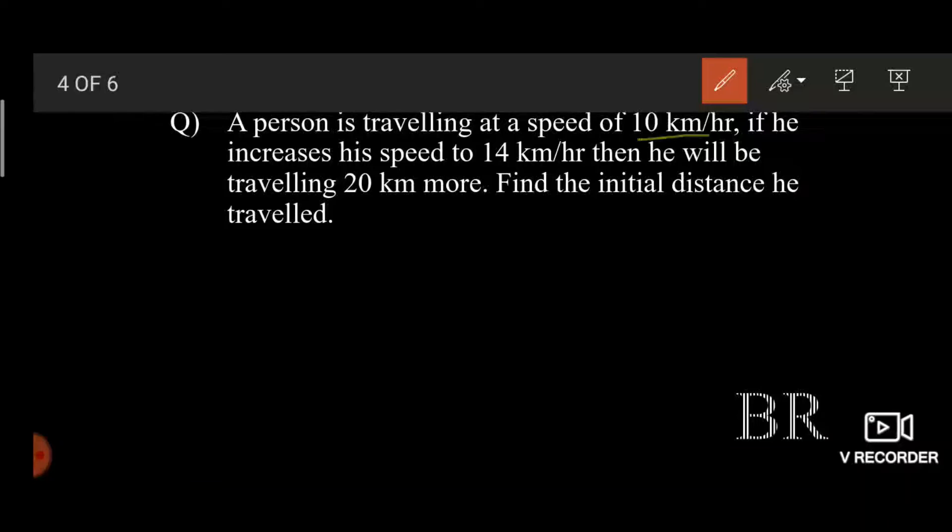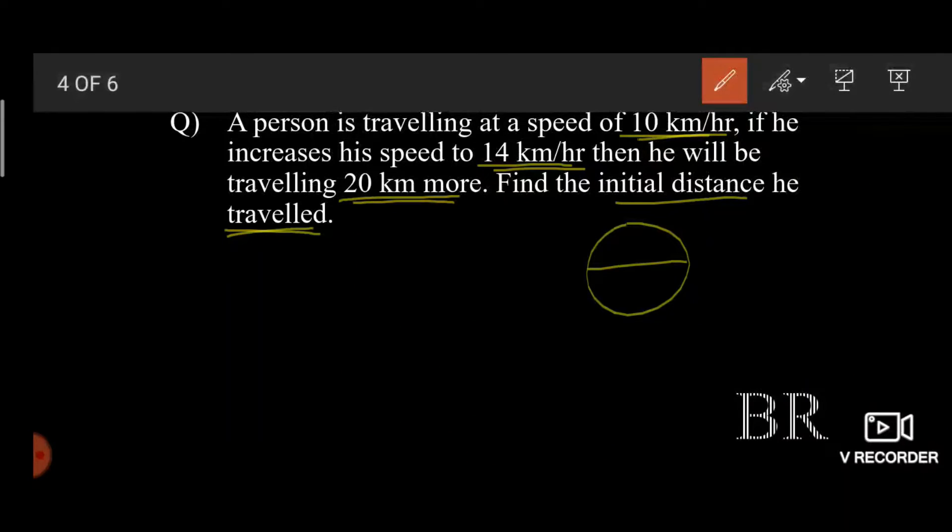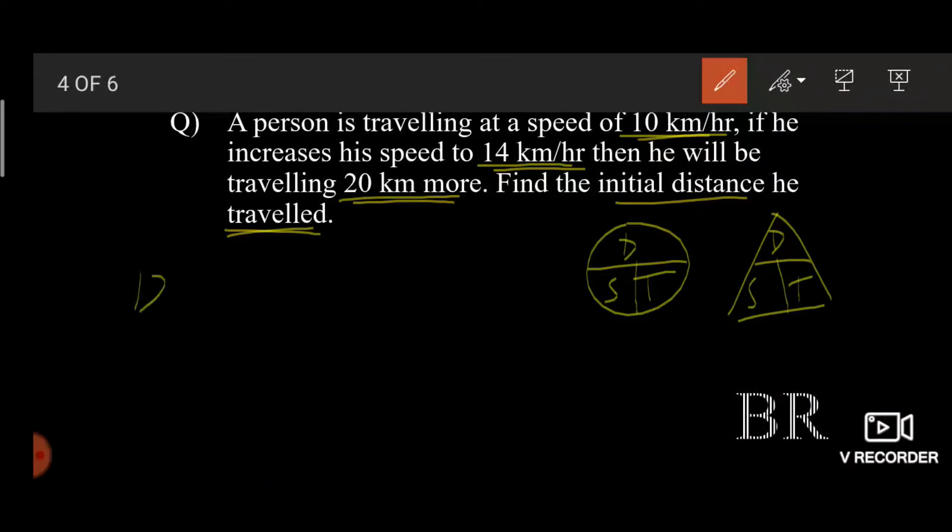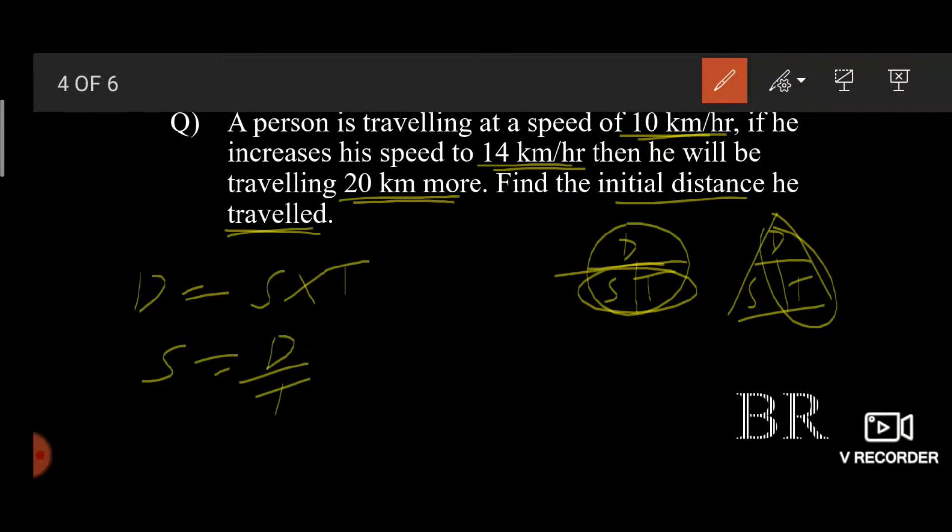A person is traveling at a speed of 10 kilometers an hour. If he increases his speed to 14 kilometers an hour, then he will be traveling 20 kilometers more. Find the initial distance he traveled. I hope you all remember the relation between distance, speed and time. Distance is equal to speed into time, speed is equal to distance by time, and time is equal to distance by speed.